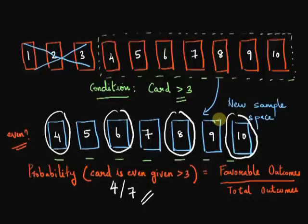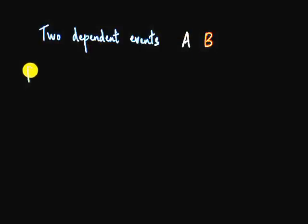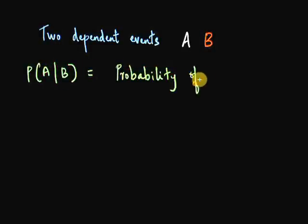So what we'll do now is to represent conditional probability using an equation, so it'll be easier to just plug in the formula when working with similar problems. When I have two dependent events A and B, the conditional probability of A given B, that's the way we express it, will be nothing but the probability of A outcomes in B.